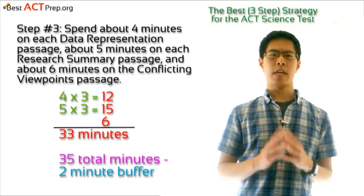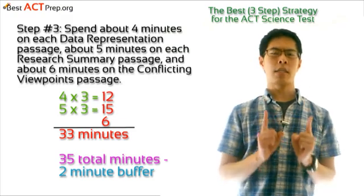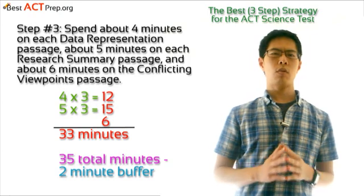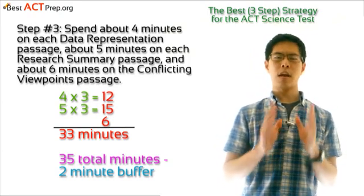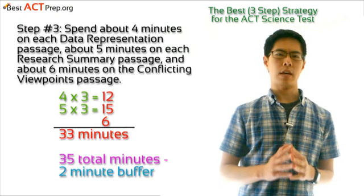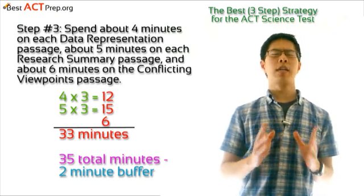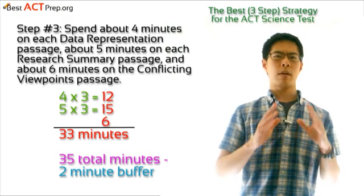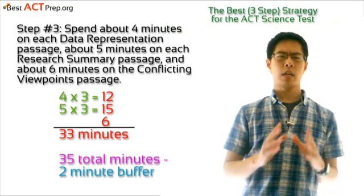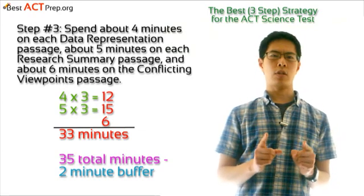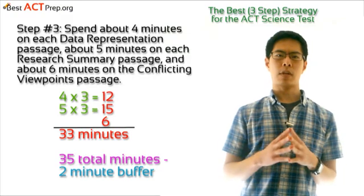The key to the ACT Science Test is to make sure you budget your time so that you can get to all seven of the passages. You don't want to miss any of the easy questions simply because you ran out of time before you could get to them. Therefore, make sure you stick very close to the time limits above, even if this means you have to make your best guess on a few questions to move on. But if you do this, circle the numbers of the questions that you had to guess on or were unsure about, so you can come back to them at the end if you have some extra time.